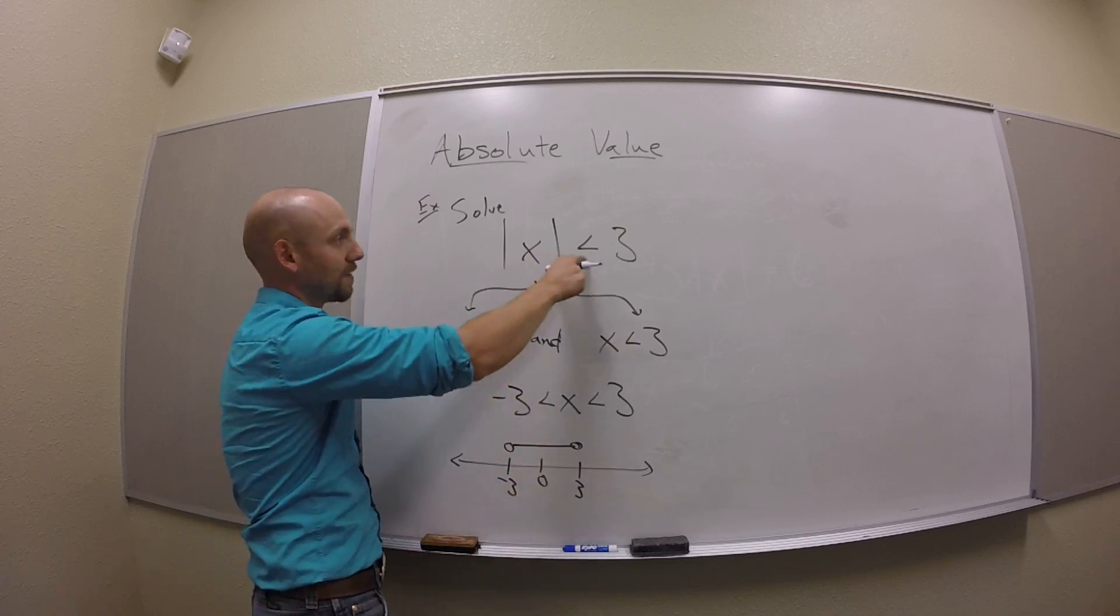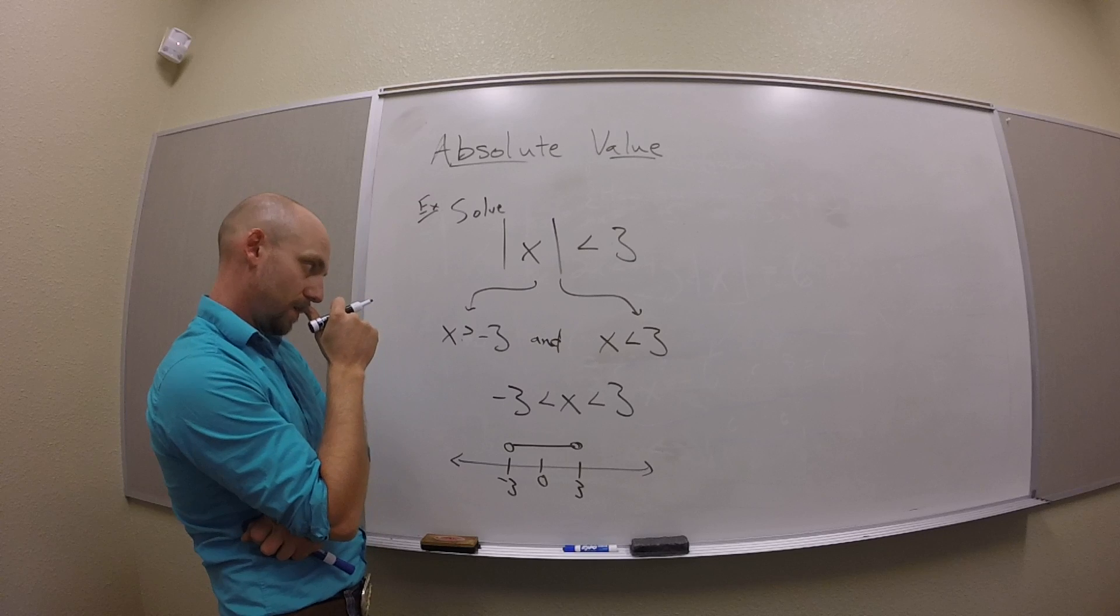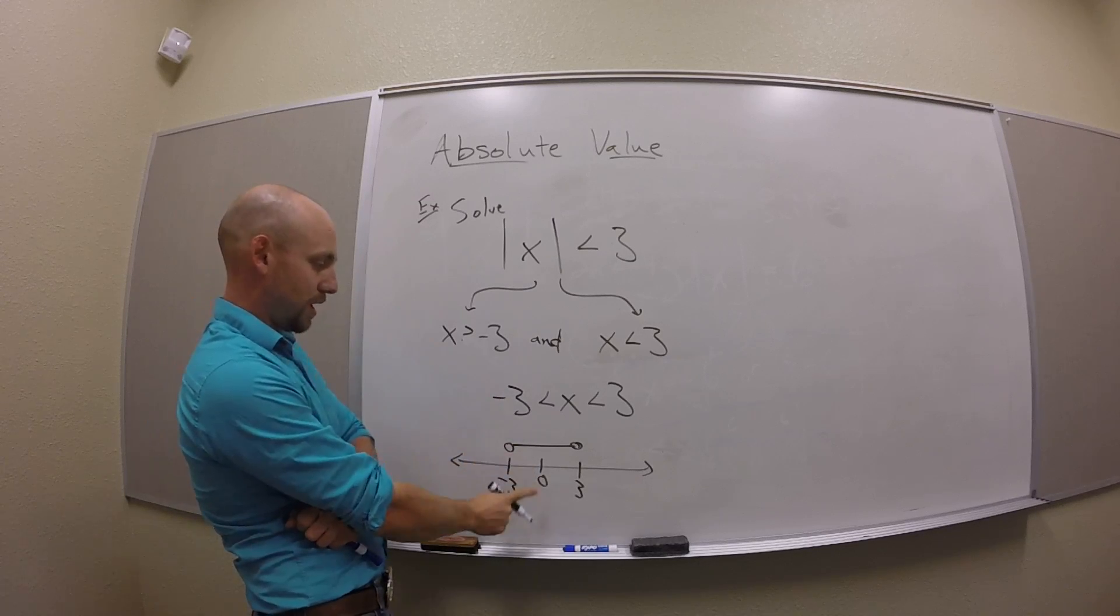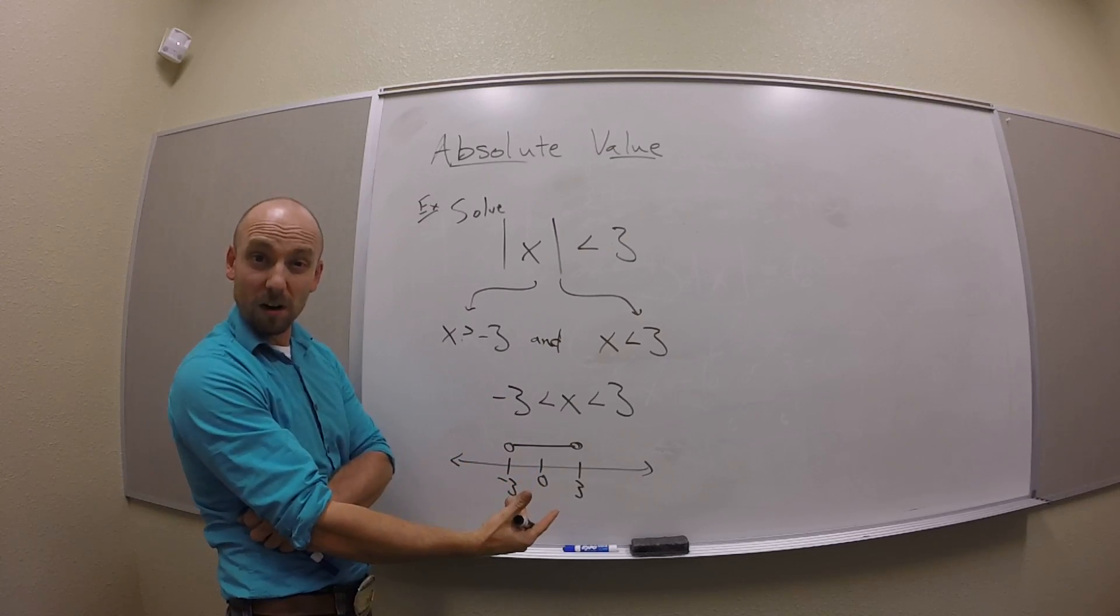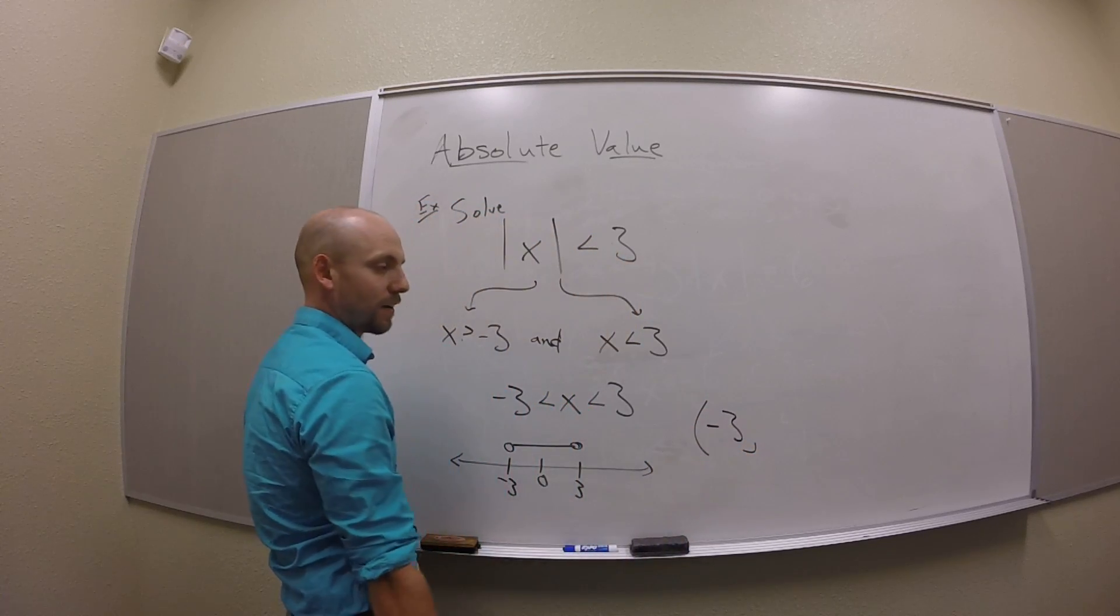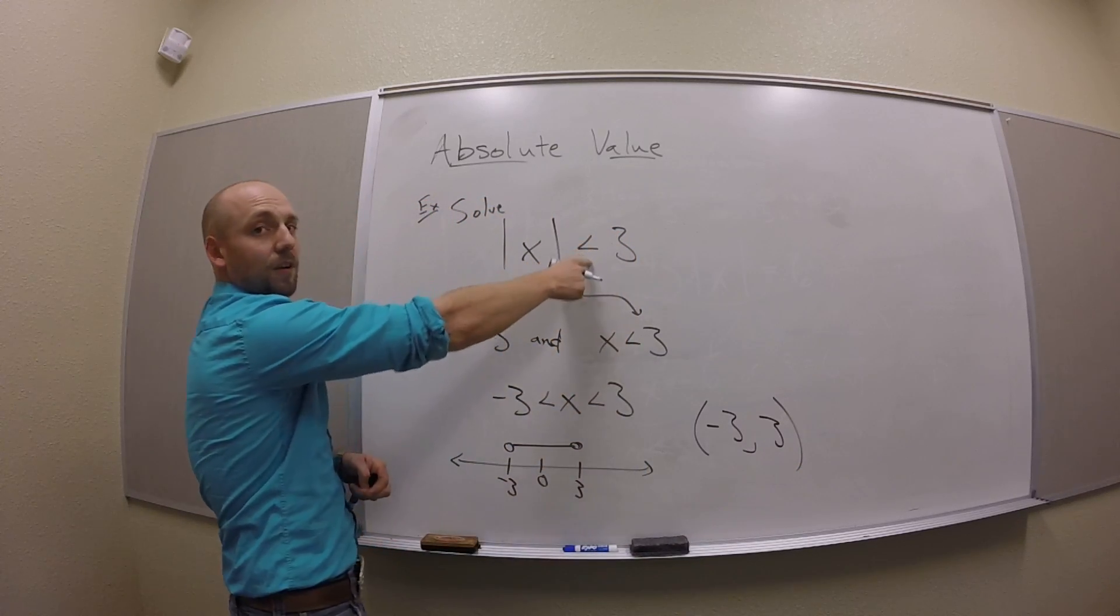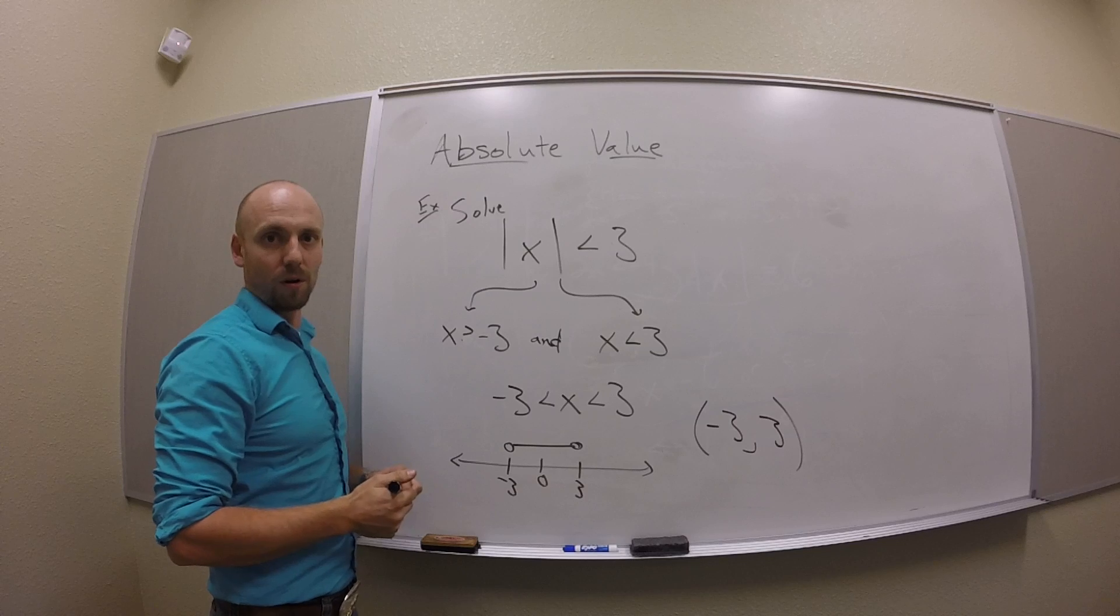Open dots, because I don't have an equal sign under here. And then what else? I have inequality, I have number line, I think I need maybe interval. So we're going to start at negative 3, go up to 3. Both sides are open, because there's no equality here or there.